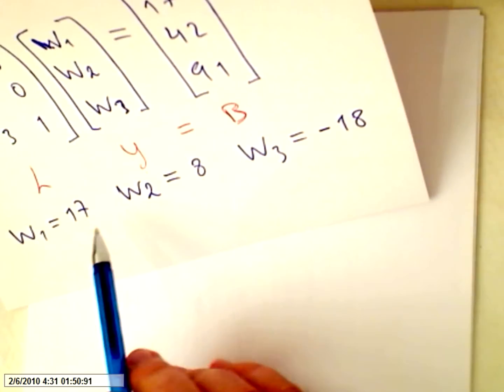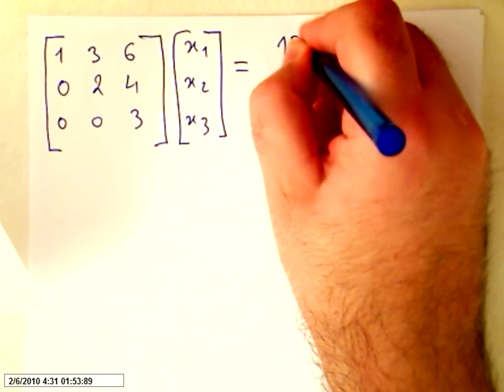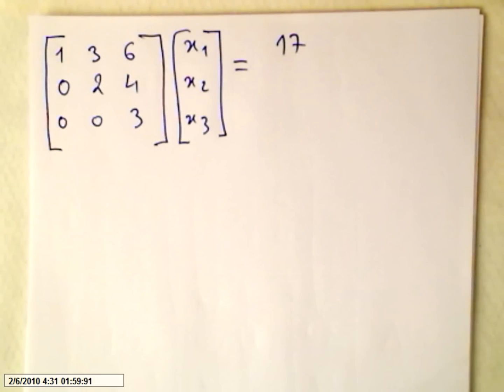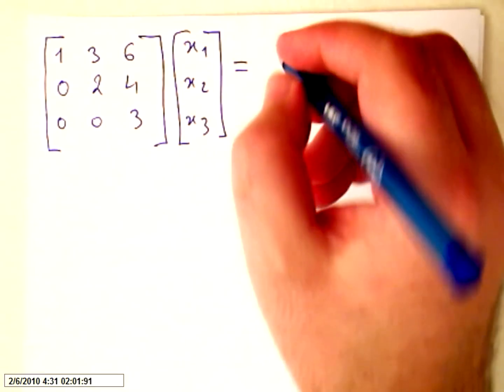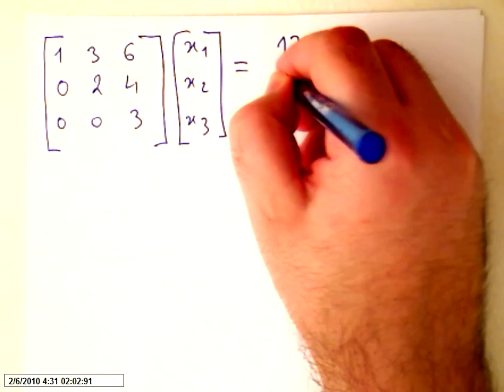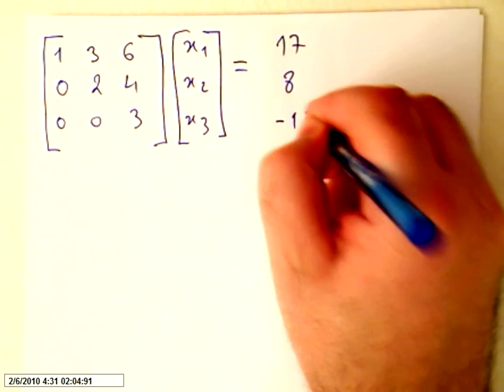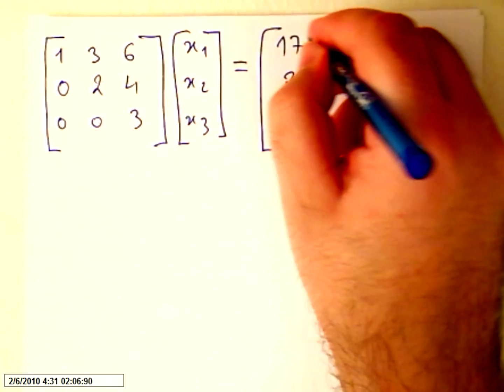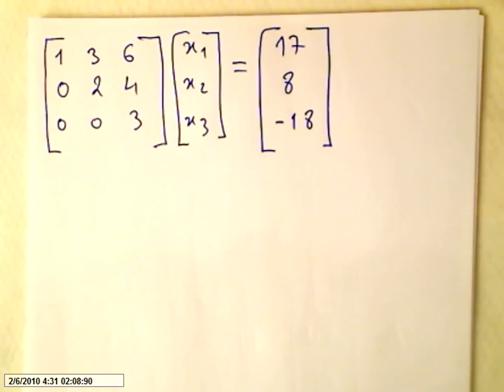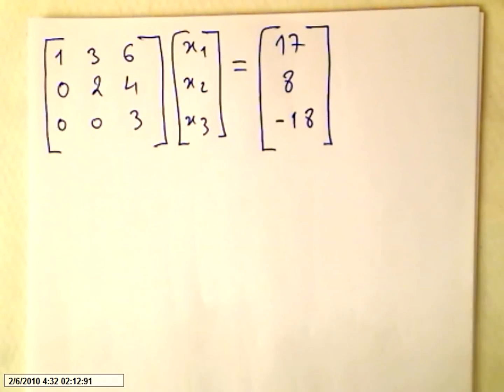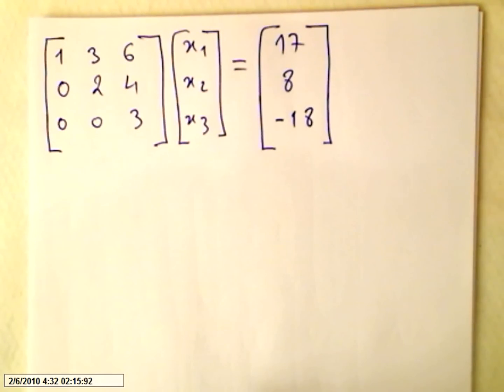Y are our old W values, so I'm going to take them from here: 17, 8, and minus 18. Now all you have to do is to solve this system.